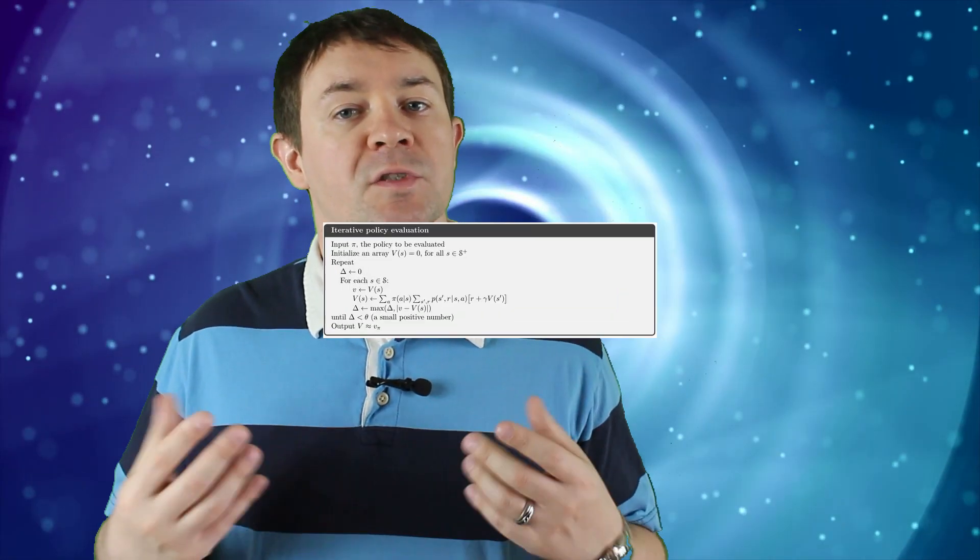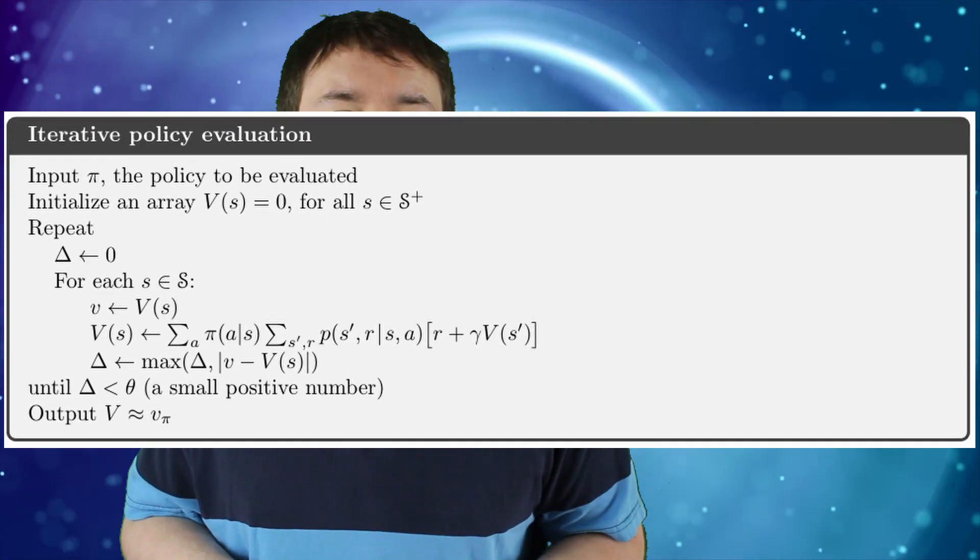To implement iterative policy evaluation in code you'd want to execute the following pseudocode which I've taken from Sutton and Barto's textbook on the topic. I'm not trying to trivialize the importance of iterative policy evaluation though. Knowing the value of the policy is the critical first step in improving the policy.